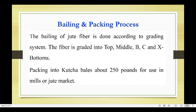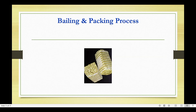Next is bailing and packing — the final process after converting into fiber. Bailing of jute fiber is done according to different grading systems. The fiber is graded into top, middle, B, C, and bottom grades, used as per quality. This is the bailing and packing process of jute fiber.